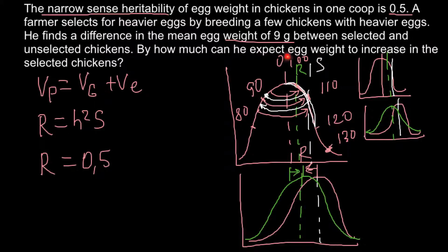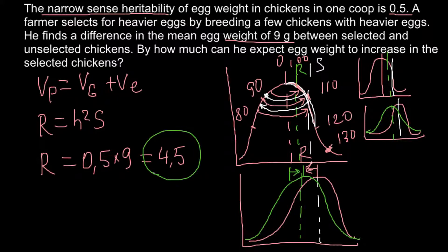We had an original mean of 100 grams and selected between 100 and 120, giving a selection differential of about 9 grams. Multiplying 0.5 by 9 gives us a response to selection of 4.5 grams. This is our answer — the result we expect in the F1 generation. We expect eggs to weigh 4.5 grams more than the mean of the original population.